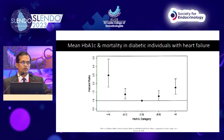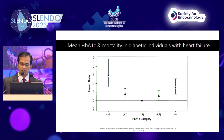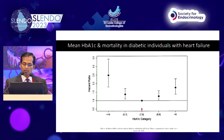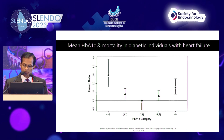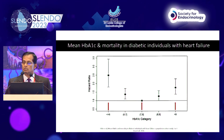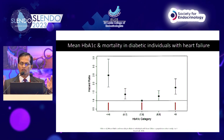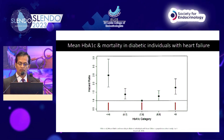Looking at mean HbA1c and mortality in diabetic individuals with heart failure: when HbA1c is between 7 and 8 you have a reduced hazard ratio; a low HbA1c increases the hazard ratio, and above 9 again increases the hazard ratio. Therefore we have a very small window to deal with HbA1c if we want to reduce cardiovascular risk.